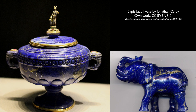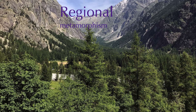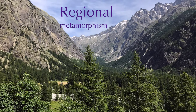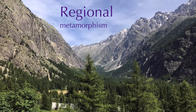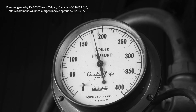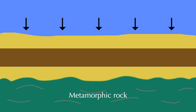So that's contact metamorphism in a nutshell. How about the other type — regional metamorphism? This process occurs over much larger areas, and therefore produces large volumes of metamorphic rock. Regional metamorphism involves not only high temperatures, but also immense pressures. It occurs when pre-existing rocks are buried several kilometres below the surface — for example, sedimentary rocks forming under the ocean floor. In this case, the pressure comes from the weight of all that overlying rock and water.